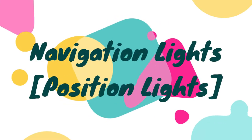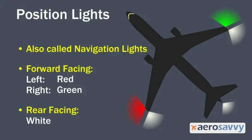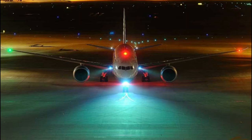Navigation lights: navigation lights consist of a red light on the left wing tip, a green light on the right wing tip, and a white light on the aircraft tail.